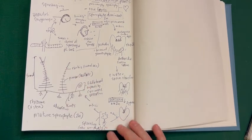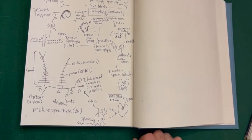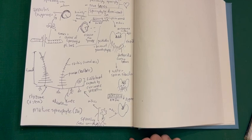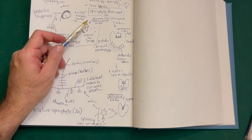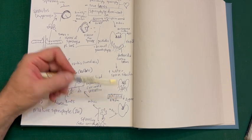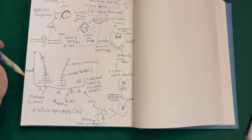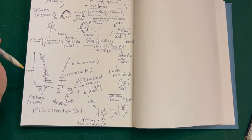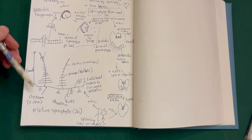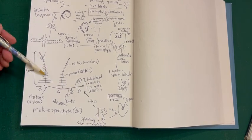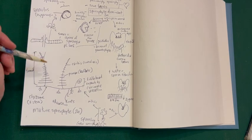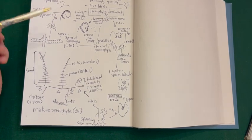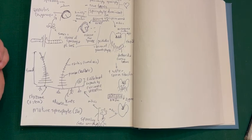That sporeling grows into a new sporophyte. To recap: meiosis happens up in the sporangia to make the spores; fertilization happens over on the gametophyte. Most of the life of the fern — the thing you see walking around in the woods — is going to be pretty much all sporophyte. I'll try to sprinkle some photos in so you can see what these things really look like beyond my cartoon drawings.